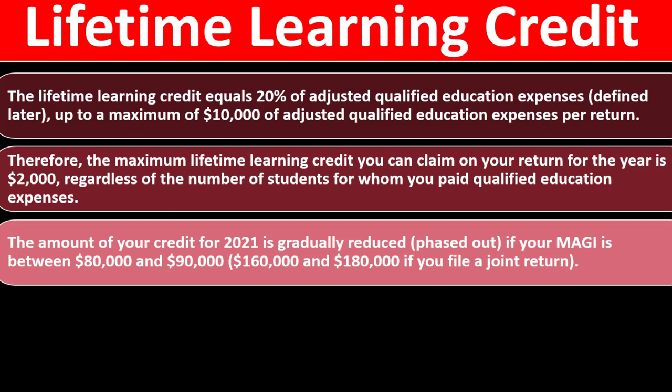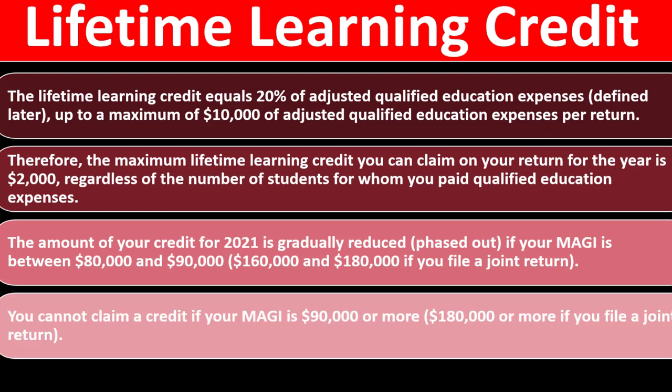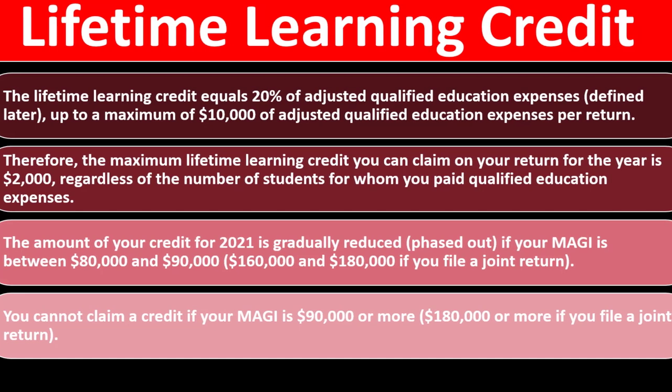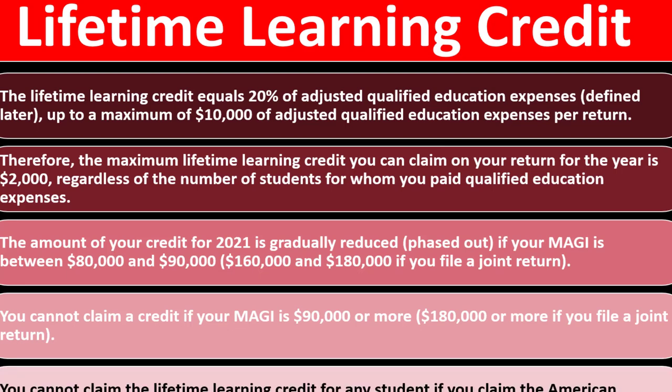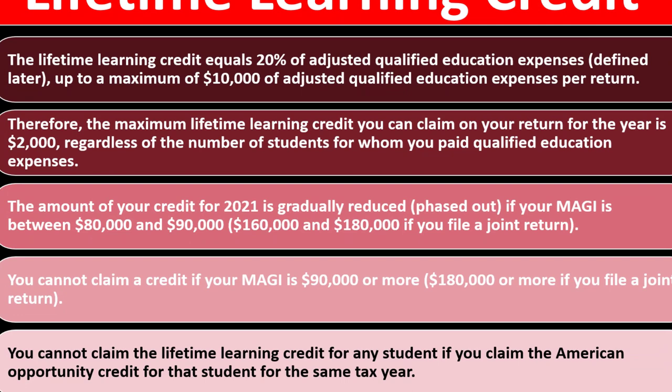The credit is gradually reduced — phased out — if your modified adjusted gross income (MAGI) is between $80,000 and $90,000 if you're not married, or between $160,000 and $180,000 if you file married filing jointly. Married filing separately causes problems with these credits. You cannot claim the credit if your MAGI is $90,000 or more (single) or $180,000 or more (married filing jointly).